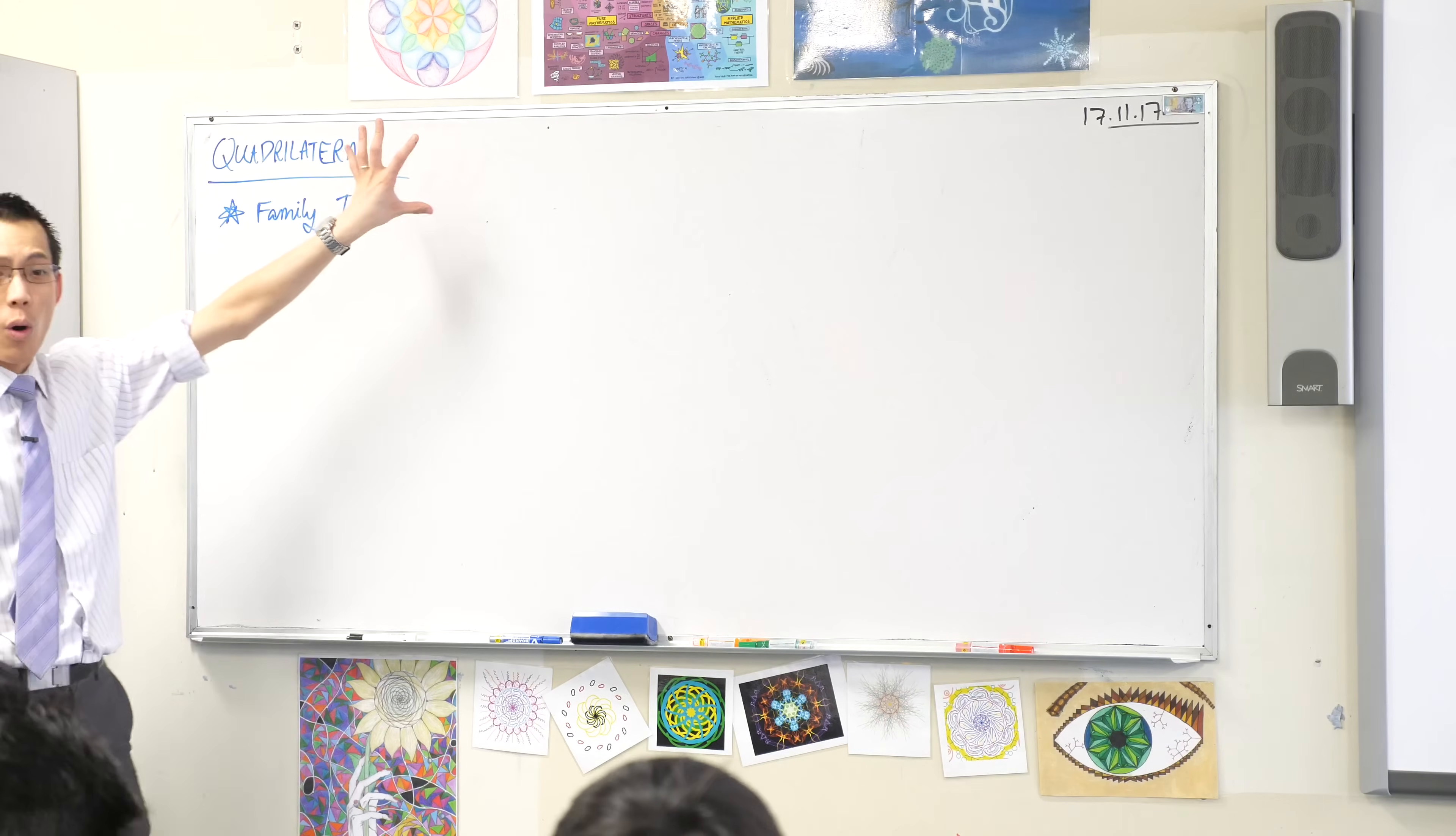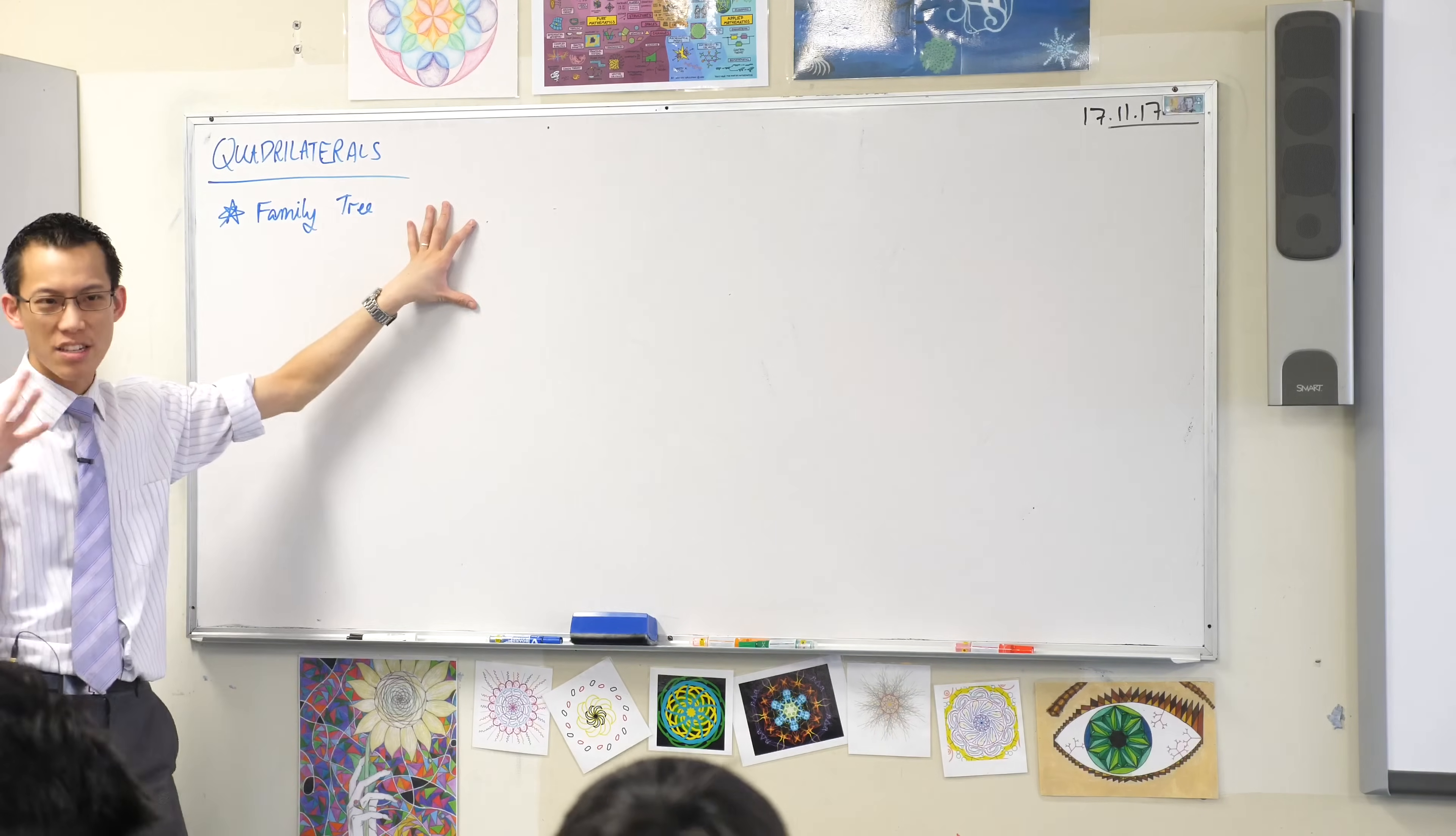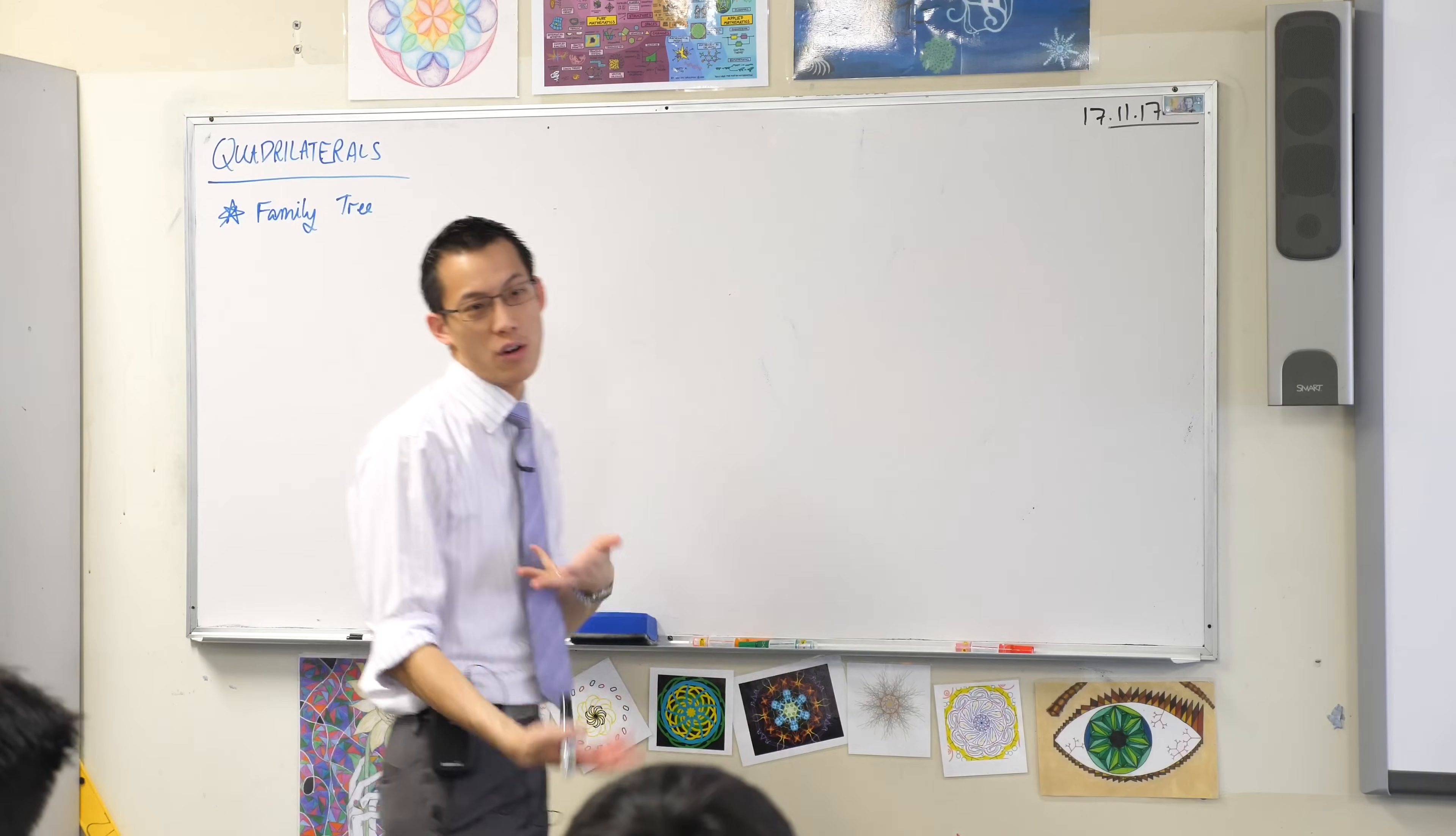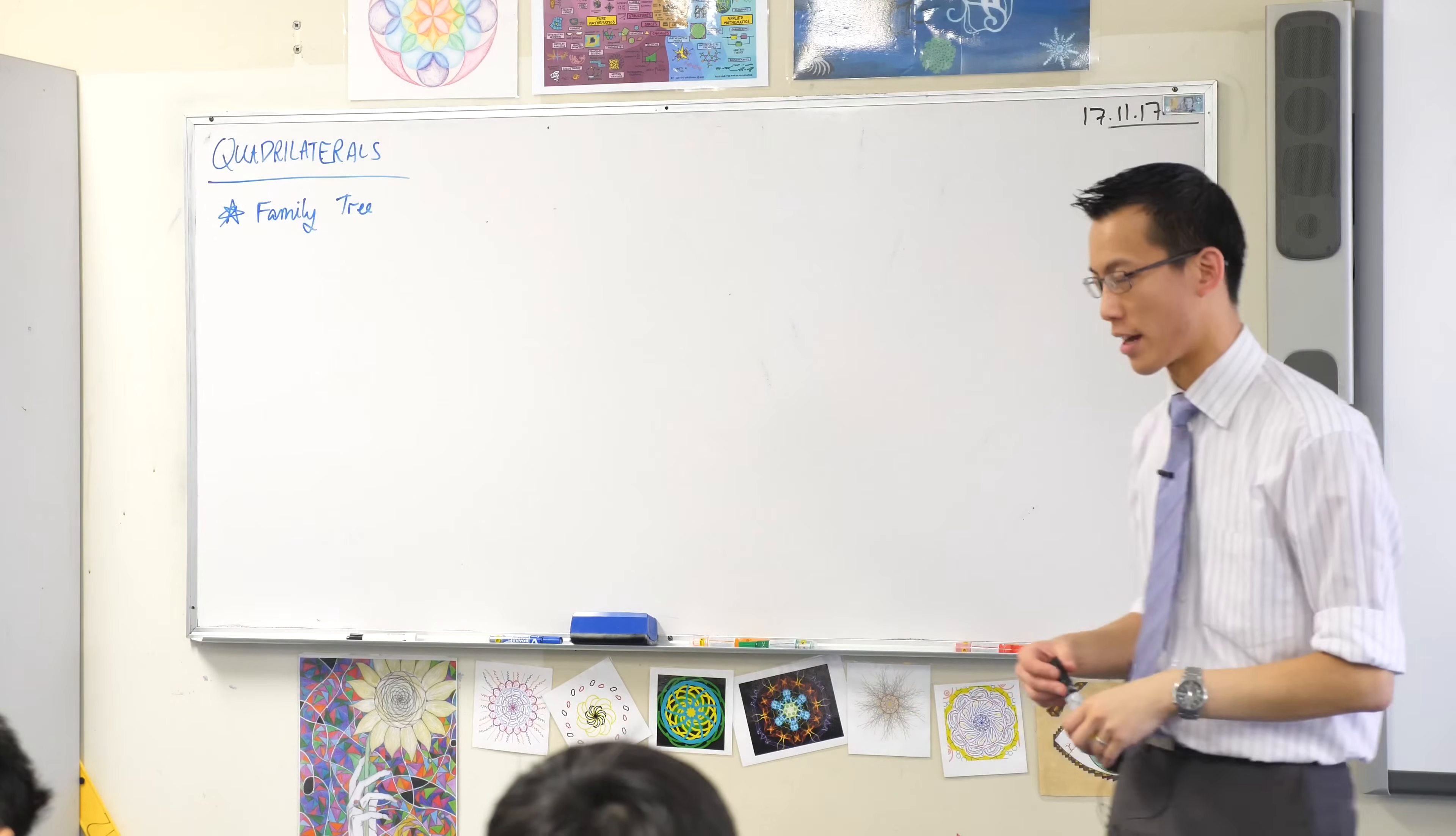So here's what we're going to do. All quadrilaterals share, as it were, some DNA, which is that they all have four sides, they're all straight, four angles, that kind of thing.